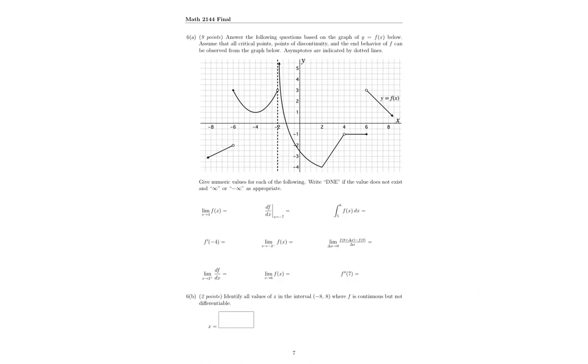Going on to this next one. Answer the following questions based on the graph of Y equals F of X. Assume that all critical points, the point of inflection and behavior of F can be observed from the graph. Asymptotes are indicated by dotted lines. Give the value for each of the following. The first one, infinity or negative infinity, is the limit as X approaches 4. So I'm going to look at, as I approach 4 from the left side and the right side, what Y value am I close to? Well, on the right side, I'm at negative 1 constantly. On this other side, I'm going to get closer and closer to negative 1.